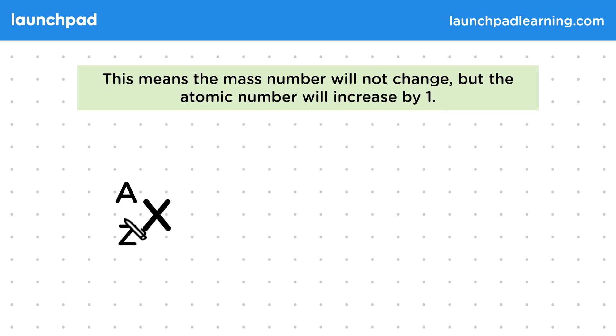So remember in atomic notation, A is the mass number, which is the number of protons and the number of neutrons added together. And Z is the atomic number, which is just the number of protons. And X represents the element.